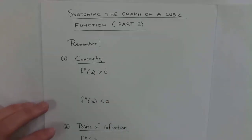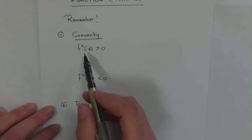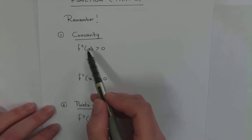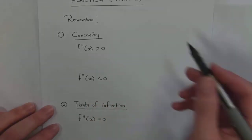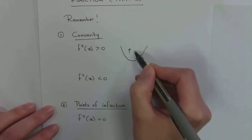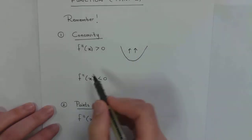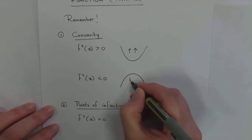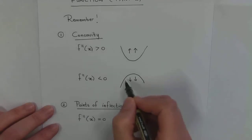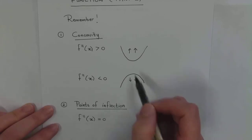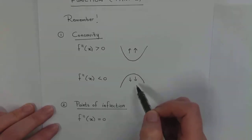From previous videos, when I discussed the second derivative, concavity is indicated by the second derivative. If the second derivative is positive, the graph is concave up — the graph curves upward. And if the second derivative is negative, then the graph is concave down — the shape looks like an arch. This is just a reminder of what the second derivative indicates in terms of the shape of the graph.